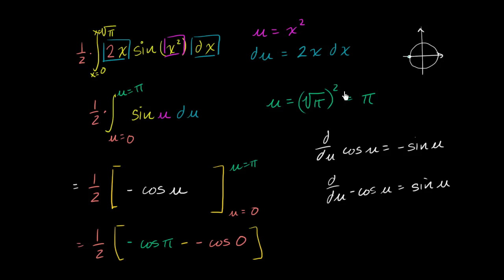Cosine of π is negative 1, but then we have this negative out front, so this whole thing will evaluate to 1. Cosine of 0 is 1, and then we're subtracting a negative 1, which is the exact same thing as adding a 1. So this whole thing also becomes a positive 1.